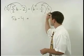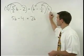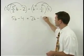On the right, 2 times b is 2b and 2 times negative 1 half is negative 1.